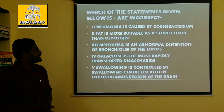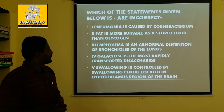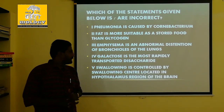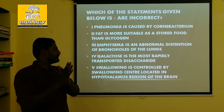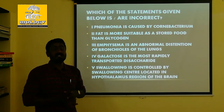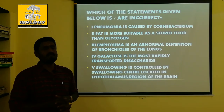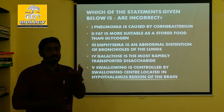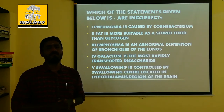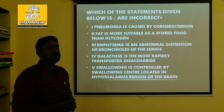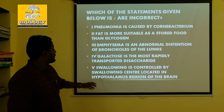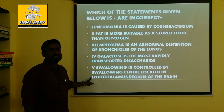Last statement: swallowing is controlled by the swallowing center located in the hypothalamus region of the brain. Normally, the swallowing process is an involuntary process. Who controls involuntary processes in the brain? Medulla oblongata. Medulla oblongata controls all involuntary actions in our body. So hypothalamus is wrong here — this statement is also wrong.